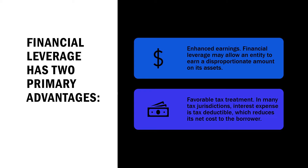There are financial leverage primary advantages. Enhanced earnings — financial leverage may allow an entity to earn a disproportionate amount on its assets. And favorable tax treatment — in many tax jurisdictions, interest expense is tax deductible, which reduces its net cost to the borrower. However, financial leverage also represents the possibility of disproportionate losses, since the related amount of interest expense may overwhelm the borrower if it does not earn sufficient return to offset the interest expense.